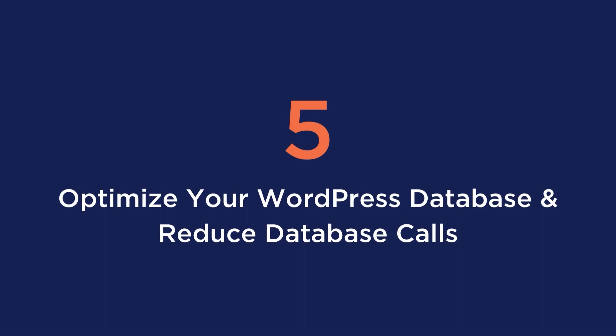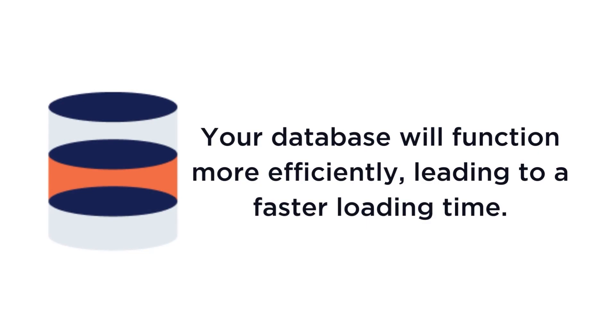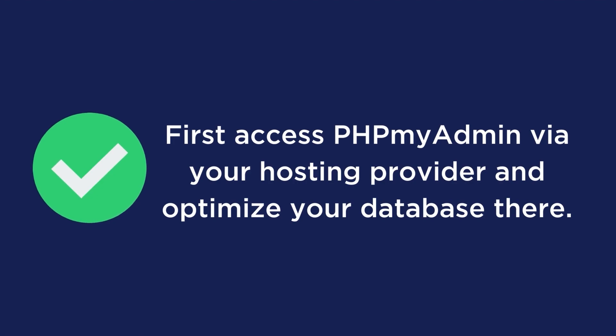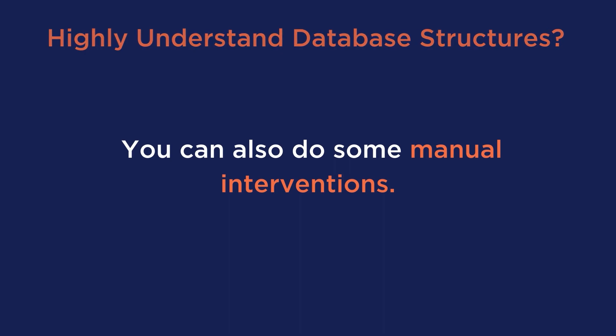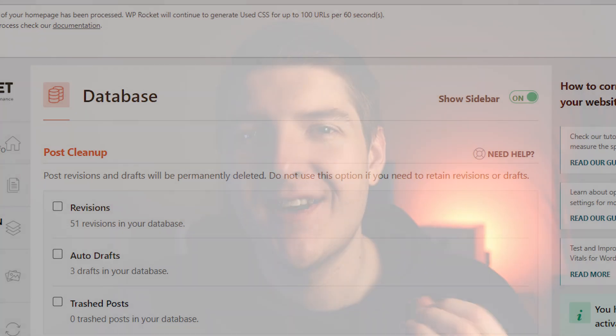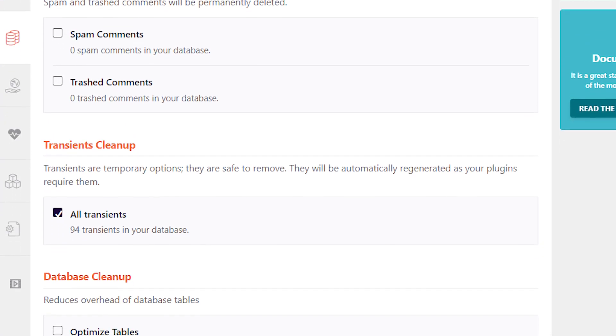Tip number five is to optimize your WordPress database and reduce database calls. It's inevitable that as your site grows, your WordPress database will grow with it, and some portions of that data will become obsolete over time. So if we can eliminate information that is no longer needed, your database will function more efficiently, leading to faster loading times. To get started, you will first have to access phpMyAdmin via your hosting provider and optimize your database there. If you understand your database structures well, you can also do some manual interventions. Our plugin WP Rocket can do a lot of this automatically — we have a database tab divided into sections for posts, comments, transients, and database cleanup.